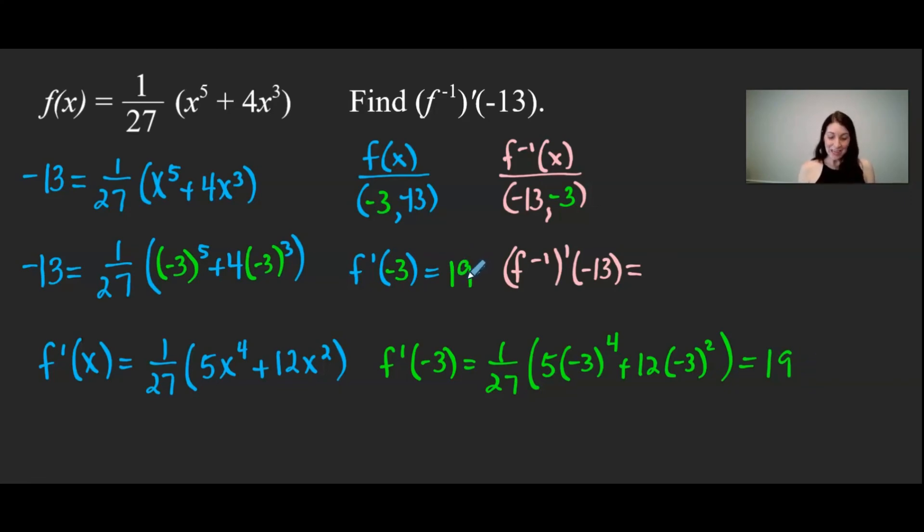And the relationship between the derivative of inverse functions is that the derivative of the inverse function will be the reciprocal to f prime of negative 3. So my final answer is 1 over 19. And that's how you find the derivative of an inverse.